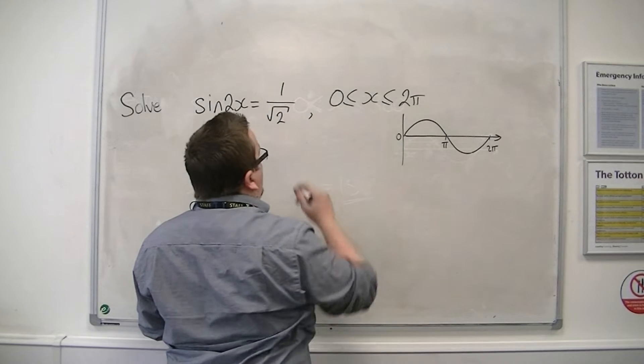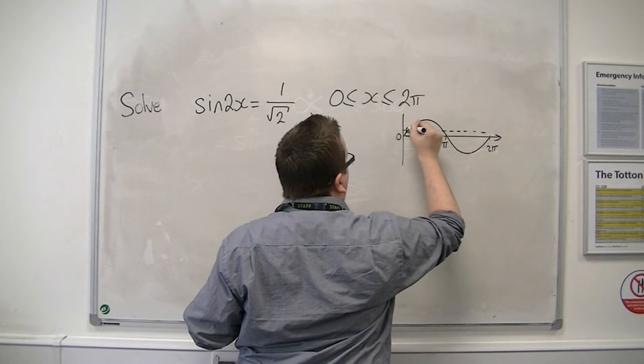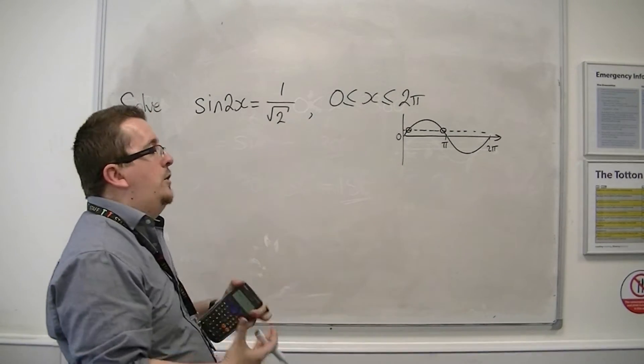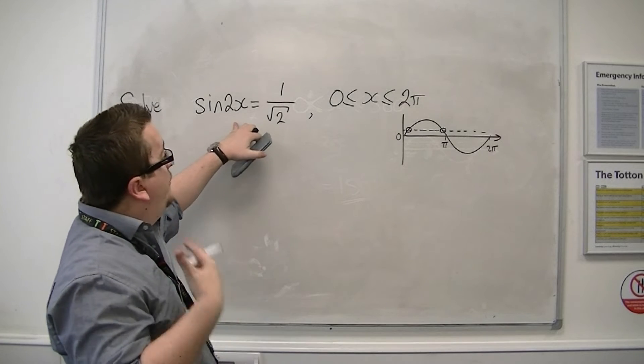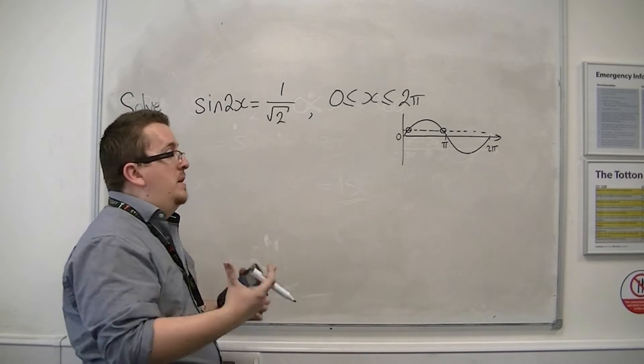So 1 over root 2 will be up here, positive. So we'll be expecting two solutions. If I was solving sin x equals 1 over root 2, I know I'm solving sin of 2x equals 1 over root 2, but you'll see how we develop that in a moment.